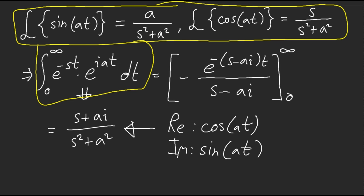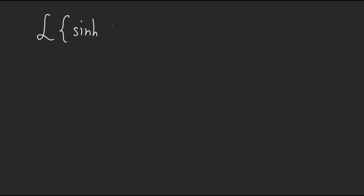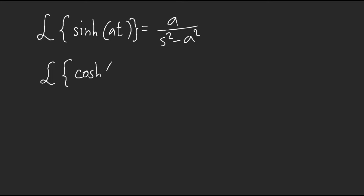For hyperbolic functions — I just kind of turn them into exponential form. For those who are curious, it's a little similar to trig. For sinh(at), the Laplace is a over s squared minus a squared — instead of plus it's minus. Same goes with cosh: it has the variable s on top, so it's s over s squared minus a squared because it's hyperbolic.